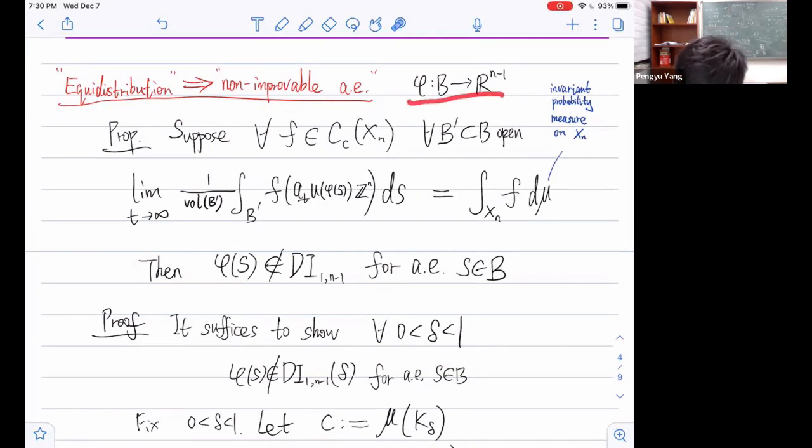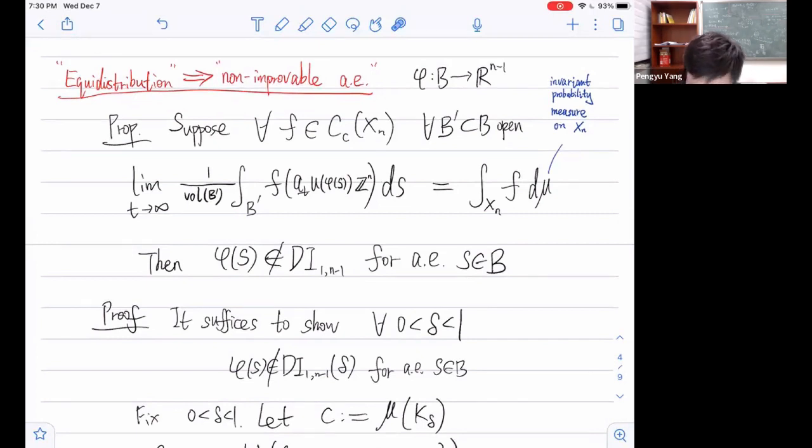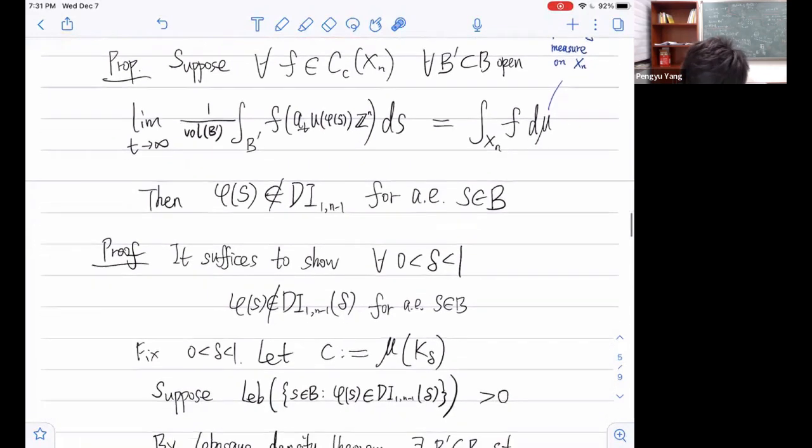Now we can state Dani's correspondence. It says that the vector x is delta improvable if and only if you look at this lattice which is obtained by applying a_t u_x to the standard lattice Z^n. So you get another unimodular lattice. And this is not in this compact set K_δ for any t large enough. The proof is elementary, but this turns out to be very useful as it builds a bridge between Diophantine approximations and the property of flows in homogeneous spaces. So we can use a lot of tools from dynamical systems to study these Diophantine properties.